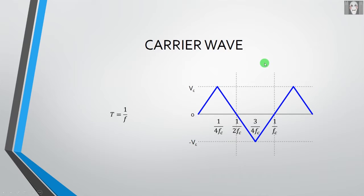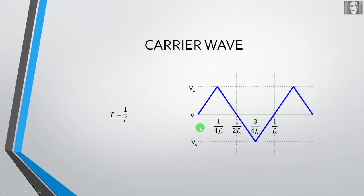The carrier wave has five points. The first point has a time value of zero and output value of zero. The second point has a time value of 1/(4fc) and output value of +Vc — this corresponds to T/4, one quarter of the time period. The third point is 1/(2fc) with output zero, corresponding to T/2. The fourth point is 3/(4fc) with output −Vc, corresponding to 3T/4. The last point is 1/fc, equal to T, with output zero, completing the cycle.